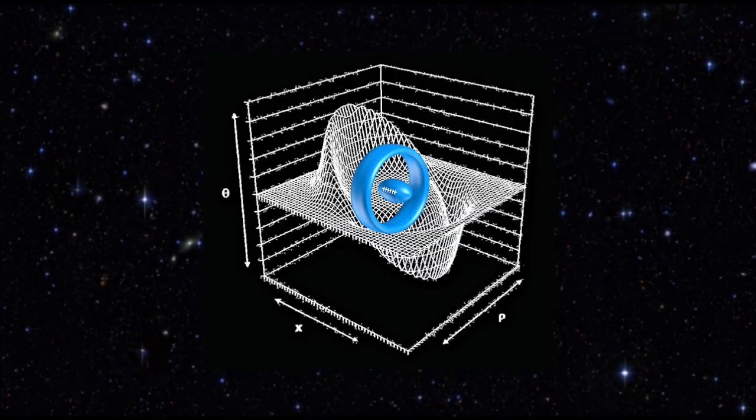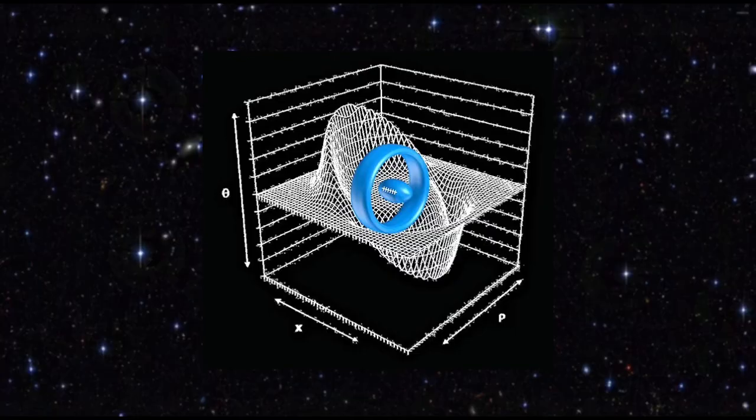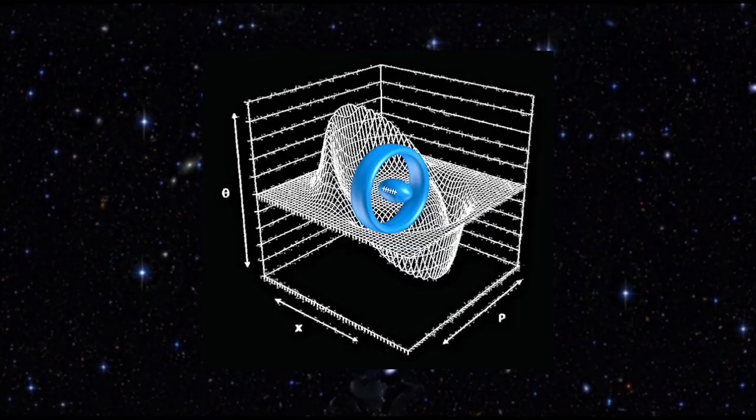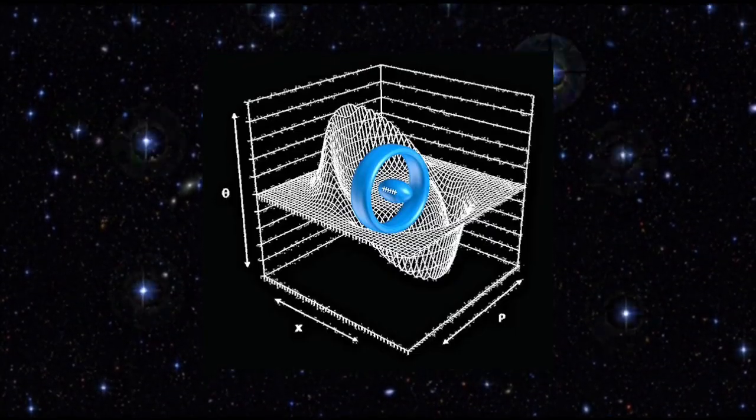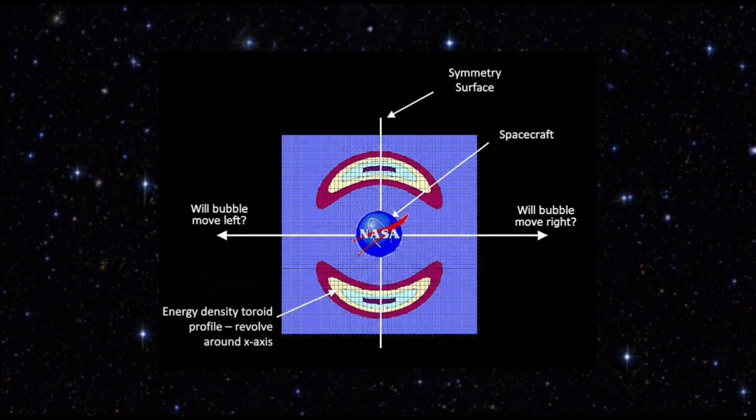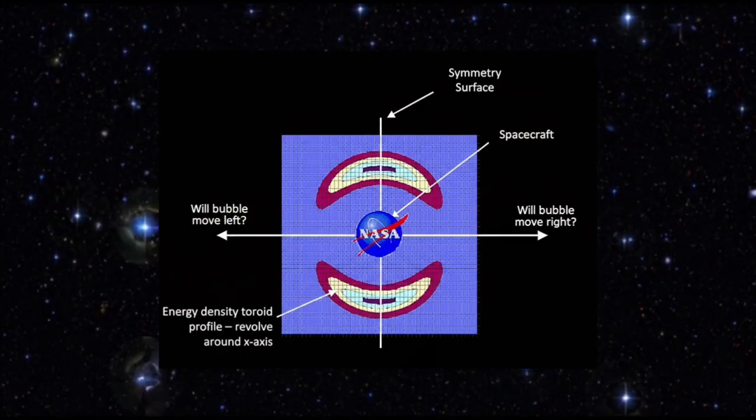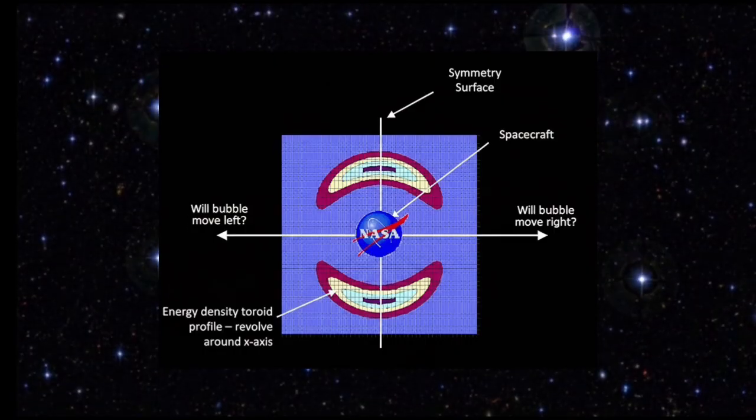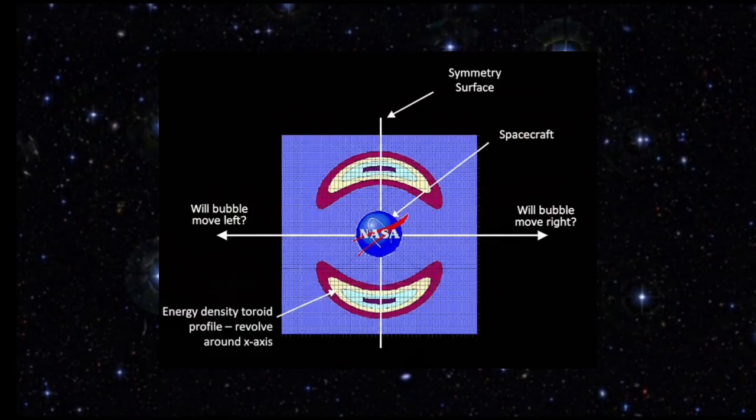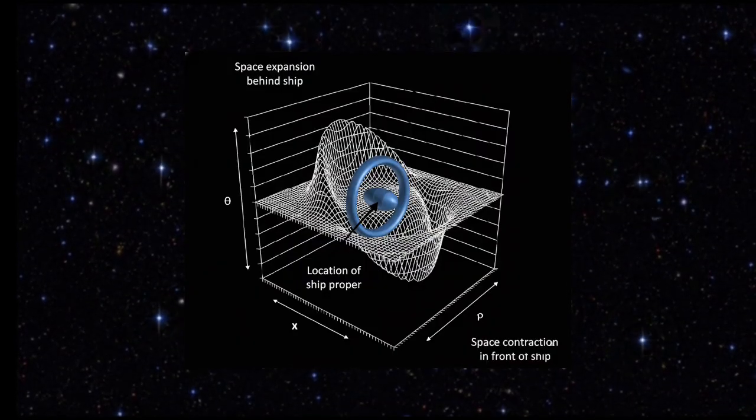How warp drive works in theory: to understand the concept, imagine a ship resting in the center of a bubble of warped spacetime. Local versus external frames: inside the bubble, the ship experiences no acceleration, it's stationary relative to the spacetime around it. But externally, the bubble itself moves through the universe, carried by the warping of space.